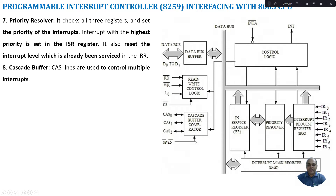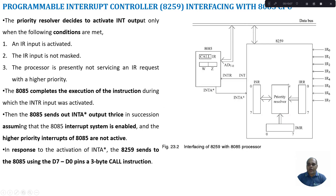The cascade buffer is used for cascading multiple 8259 ICs to increase interrupt handling capability. In the interfacing diagram, the 8259 IC supports eight interrupts IR0 to IR7, with an ISR, interrupt request register, and interrupt mask register inside. The priority resolver identifies which interrupt needs to be serviced. Once identified, the signal is sent through the INT line, which goes as an input to the INTR line of the 8085 microprocessor.